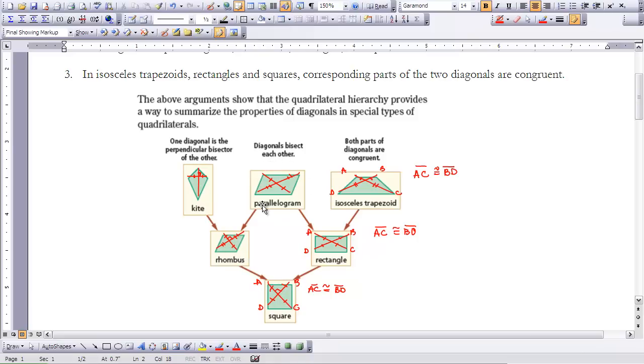Diagonals bisect each other, so that's a quality of the parallelogram. But since rhombus, rectangles, and squares are all parallelograms, those also follow the diagonals bisecting each other.